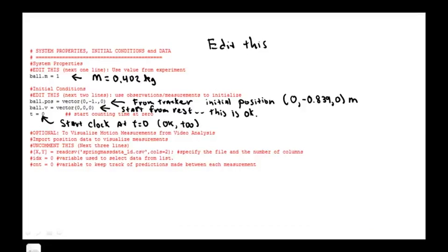The next set of lines in the code as usual involve the initial conditions and system properties. As you know you'll need to edit these to put in the system mass and the initial position velocity and initial starting time consistent with what we discussed earlier. Again there are some lines commented out. We'll leave these alone and come back to them later.